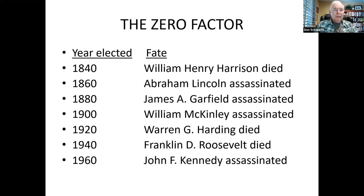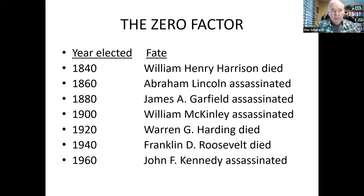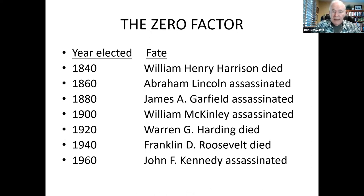If there was any presidential election most similar to the upcoming election, it is the election of 1860. Both that election and this election occurred in a deeply polarized nation against a backdrop of unsettling and sometimes violent events. The upcoming election is taking place amid a pandemic, an economic crisis, a movement for social justice, and increasing violence between the political left and the political right. Similarly, the election of 1860 was preceded by a decade of division, discord, and violence, and it all centered around the issue of slavery.